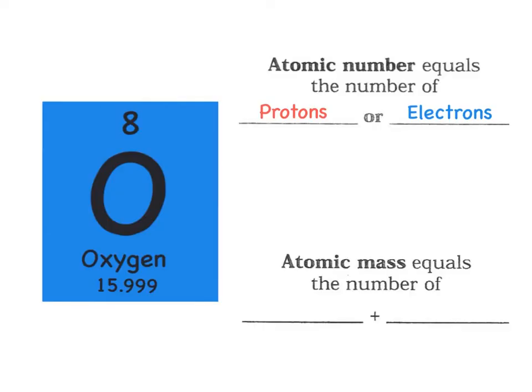Now the atomic mass equals the number of blank plus blank. What lives in the nucleus? We all remember that protons and neutrons live in the nucleus. So when I add protons plus neutrons, that will equal my atomic mass.